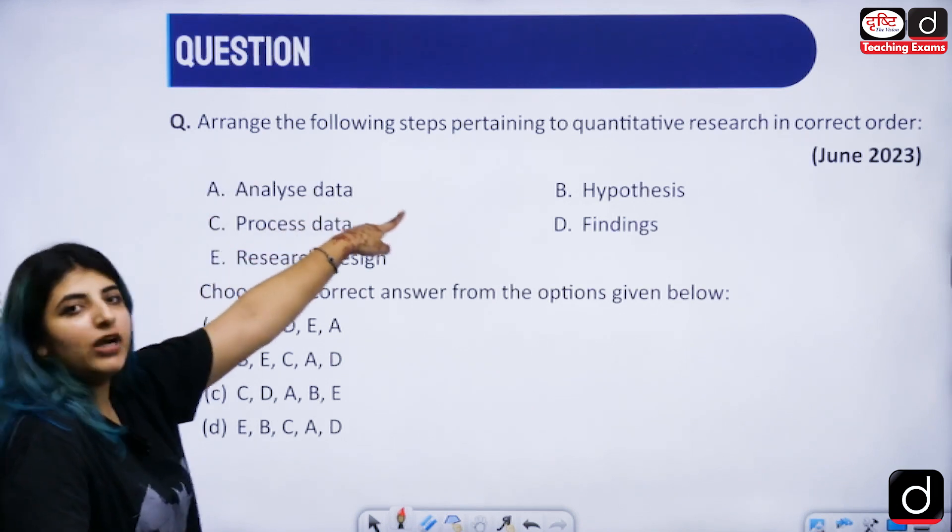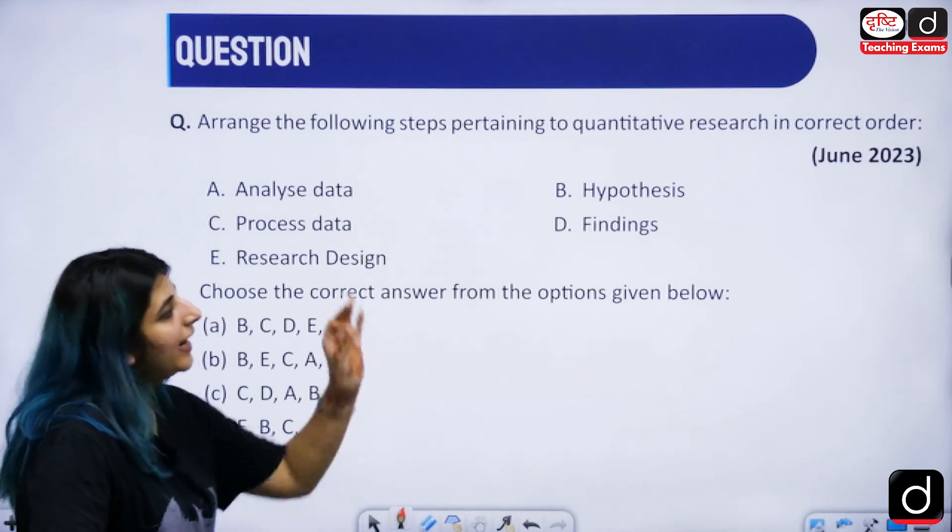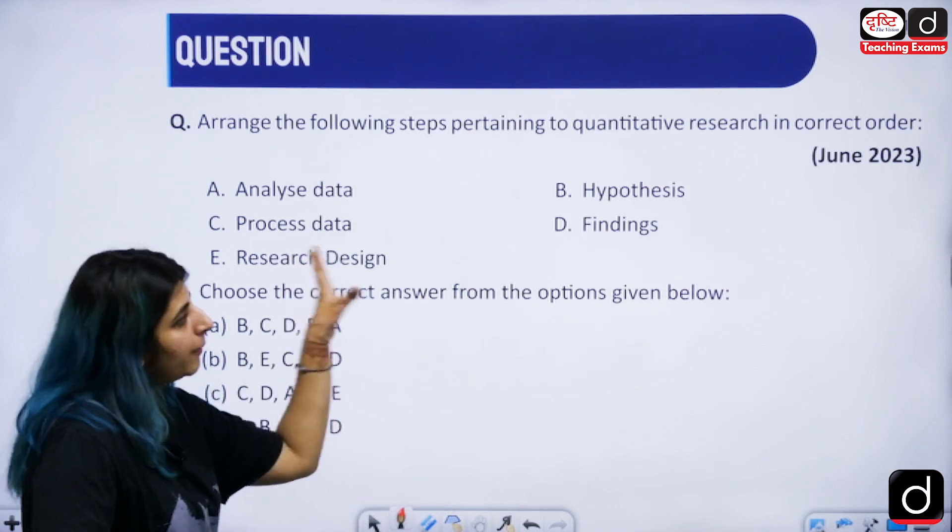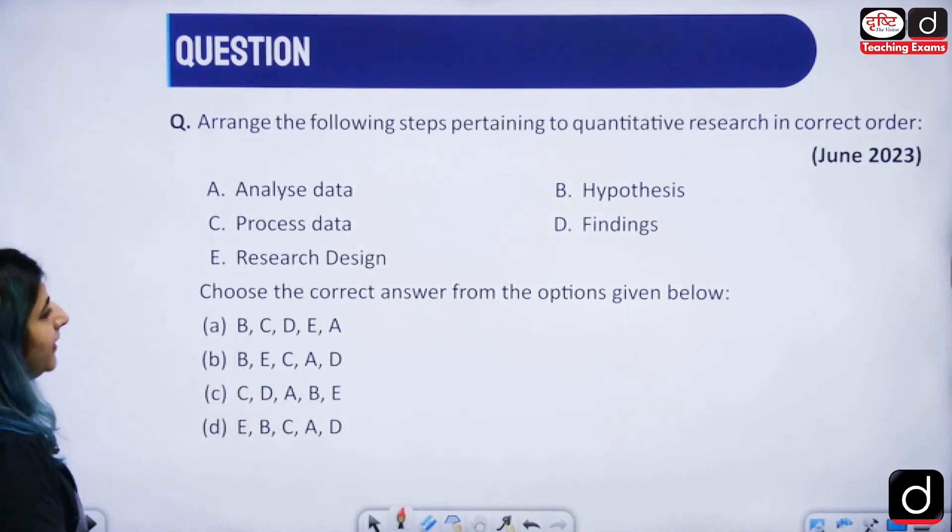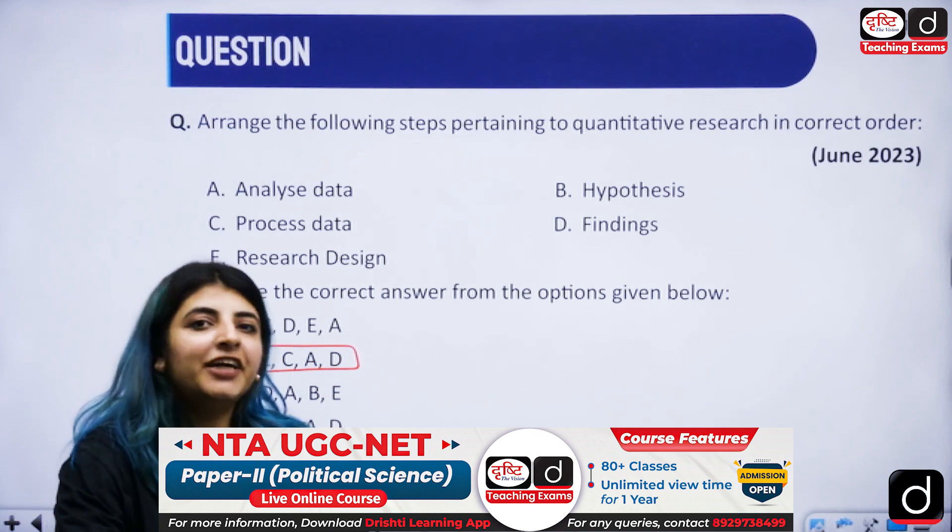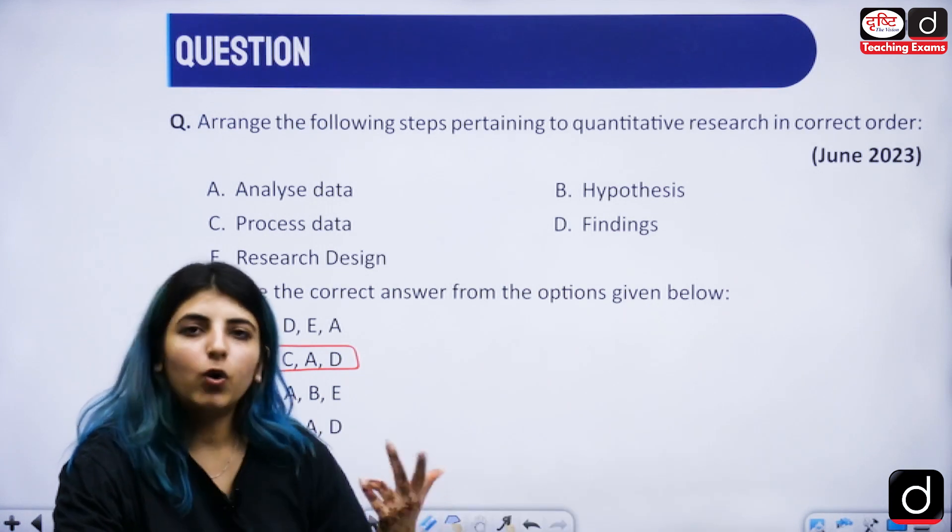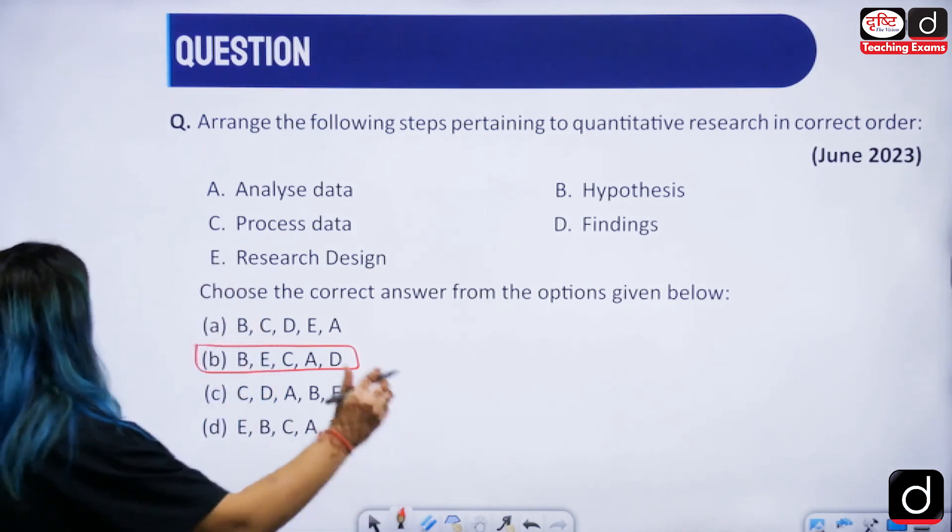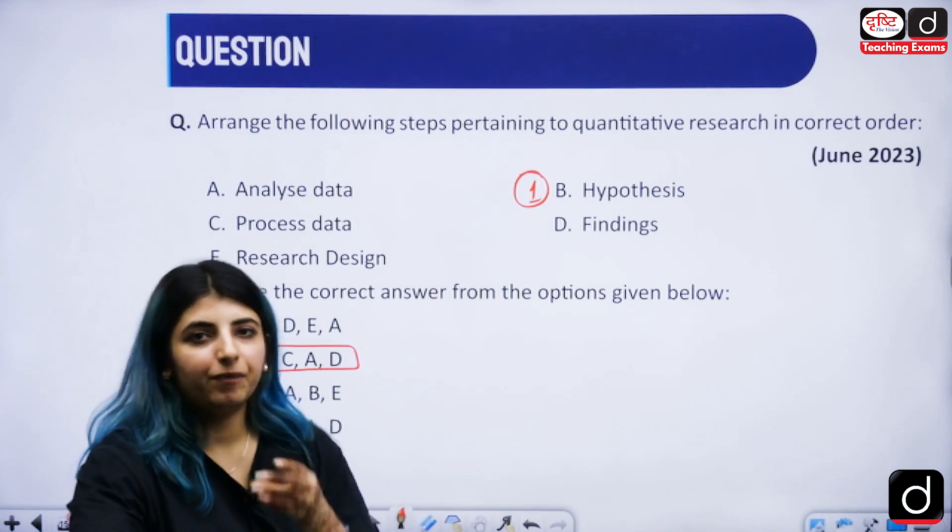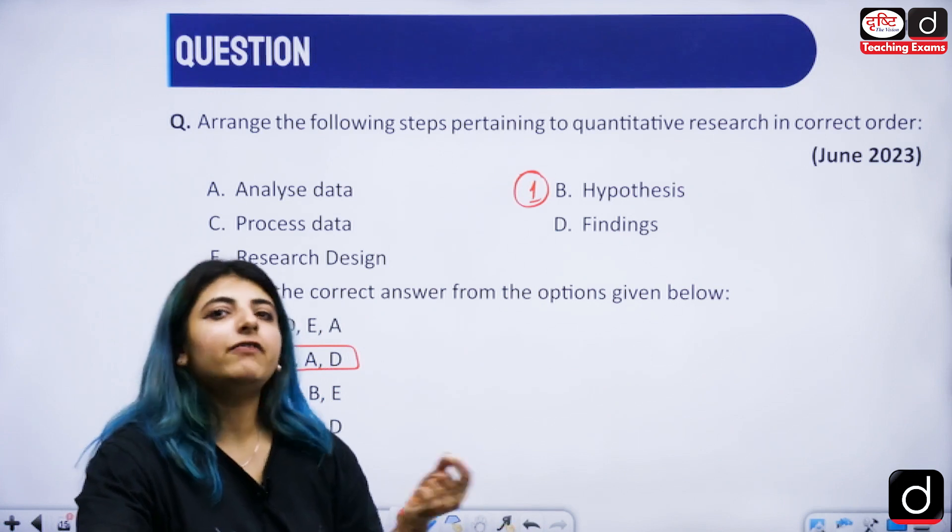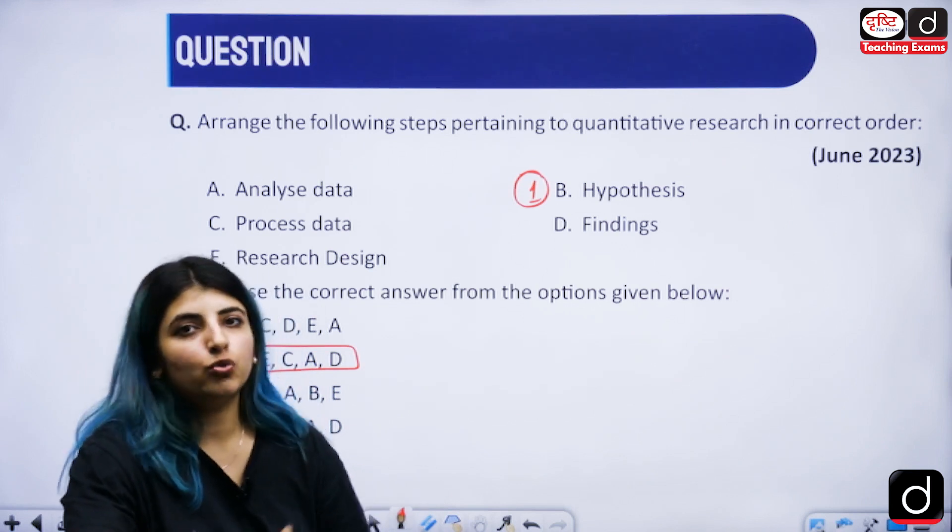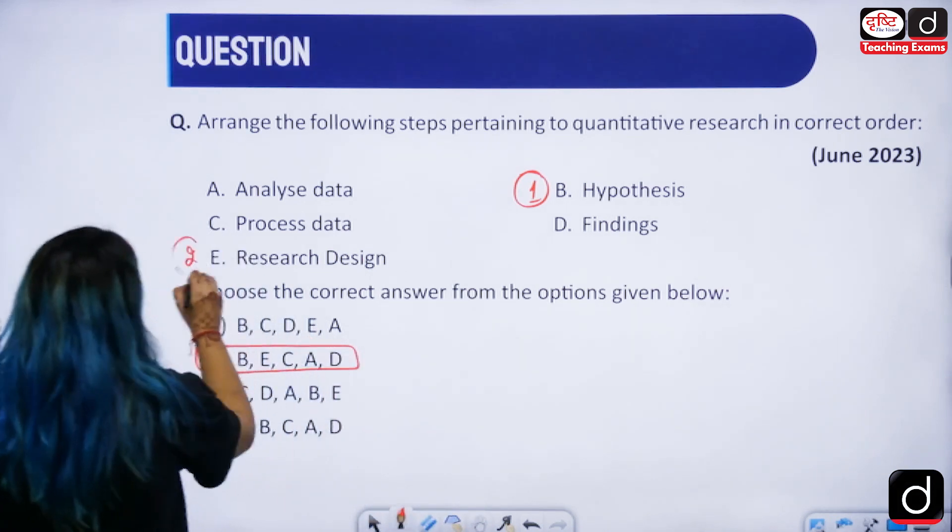Next question is arrange the following steps pertaining to quantitative research in correct order. You will have to pause your screens, take your time because you will have to put these steps in a particular sequence, sequential manner. The answer to this question is option B that is B E C A D. Whenever you are doing quantitative research you will have to follow certain steps. First of all you are going to choose the hypothesis. You are going to have a question in your mind, you are going to frame a hypothesis for the same. Hypothesis is a tentative statement which is believed to be true by the researcher. You want to answer that particular statement, is it true or false.